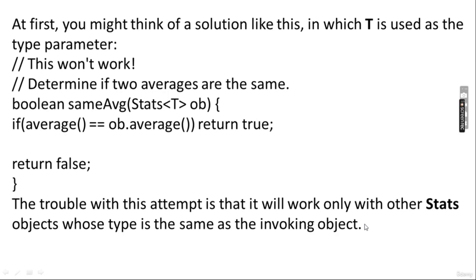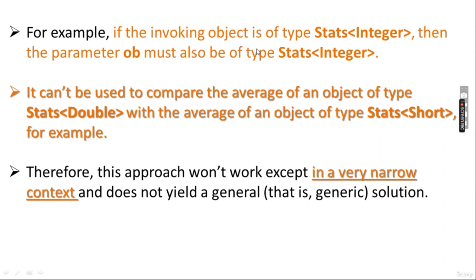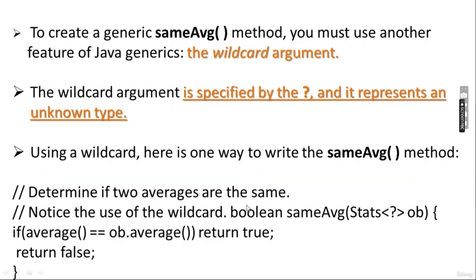The problem is that this naive approach will only work with other Stats objects whose type is the same as the invoking object. If the invoking object is Stats<Integer>, then ob must also be Stats<Integer>. It cannot compare the average of a Stats<Double> with the average of a Stats<Short>, for example. This approach won't work except in very narrow situations and does not yield a general, generic solution.